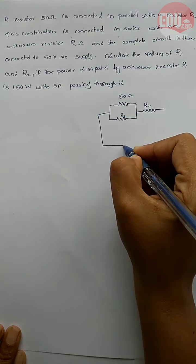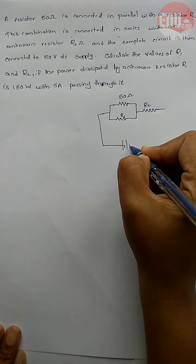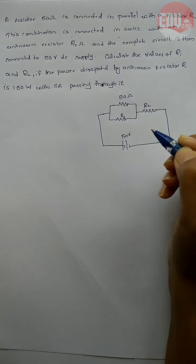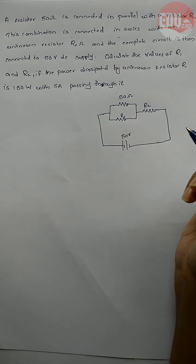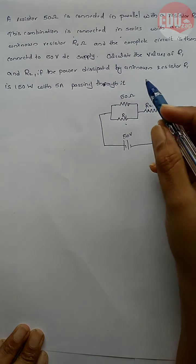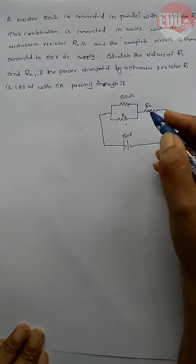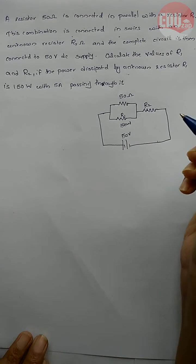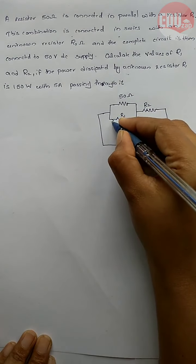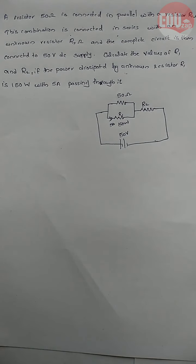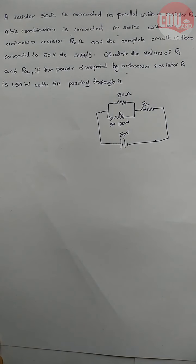The complete circuit is connected to a 50 volt DC supply. We need to calculate the values of R1 and R2, given that the power dissipated from resistor R1 is 150 watt, and the current flowing through it is 5 ampere.